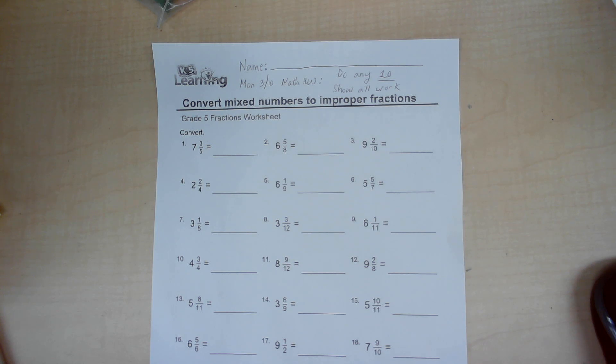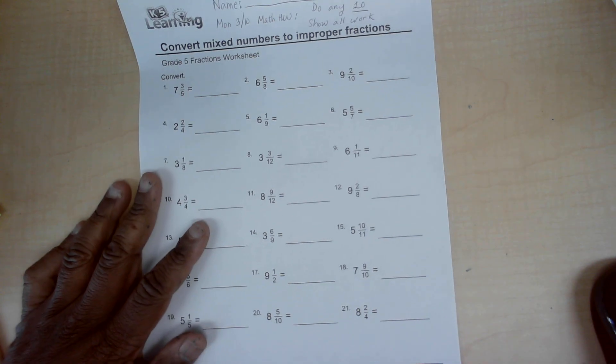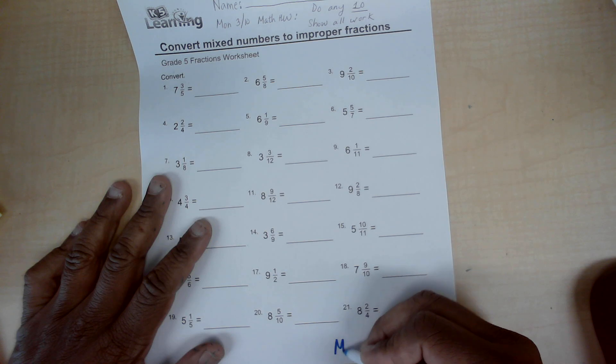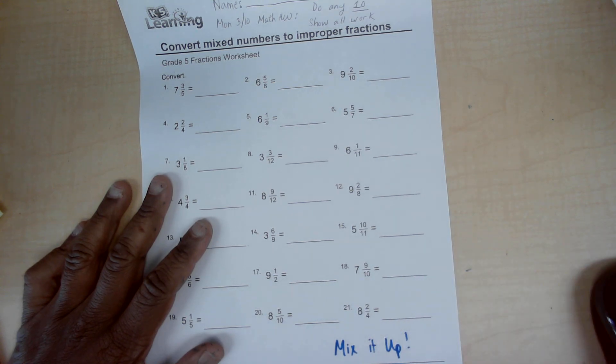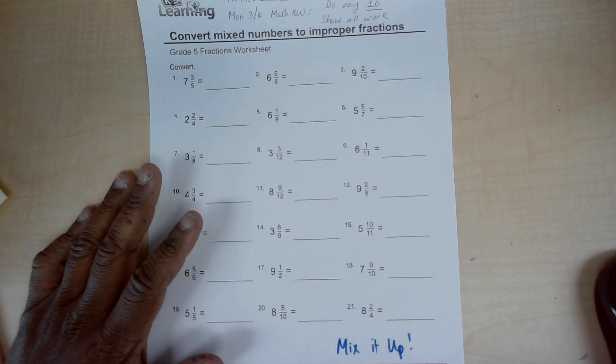I'll do the first two and then you can do the rest on the bottom of the sheet. If you write mix it up, that will earn you an extra point. If you do more than 10, you know, an extra point as well.